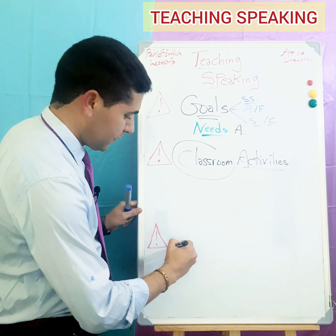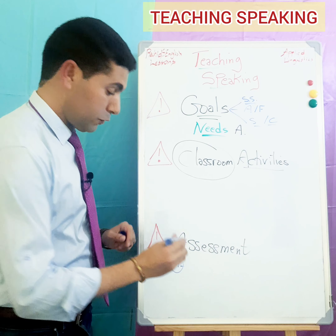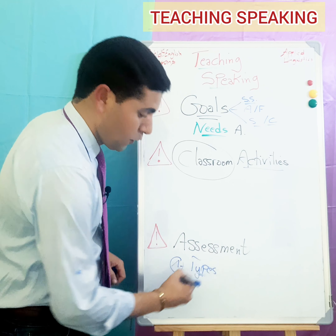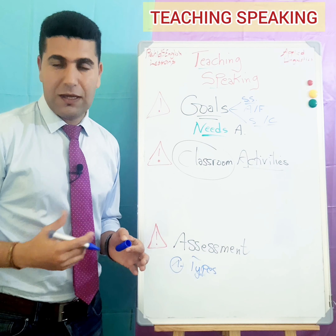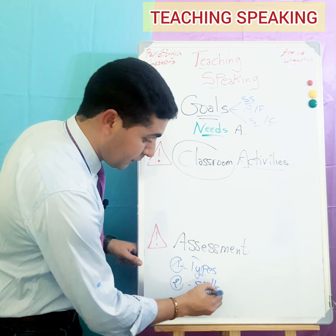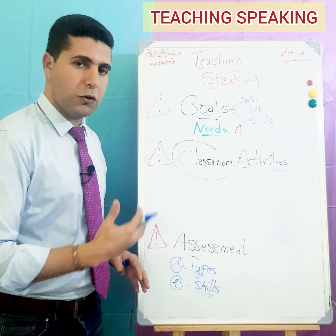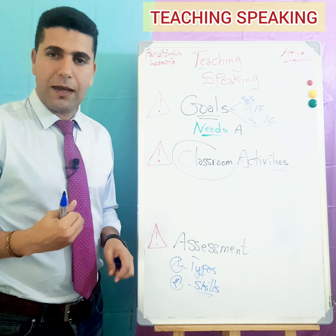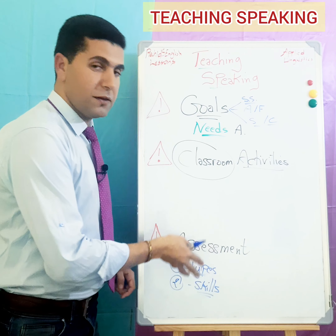The last step is assessment — how to assess speaking. The first thing you have to do is determine the type of speaking you want to assess: small talks, conversations, discussions, transactions, etc. Number two, you should determine the skills you want to assess. For example, in conversation or dialogue, what skills do you want to focus on? For example, turn taking, turn maintaining, asking questions, answering, using expressions, etc. These are some skills you can focus on in these types of speaking.